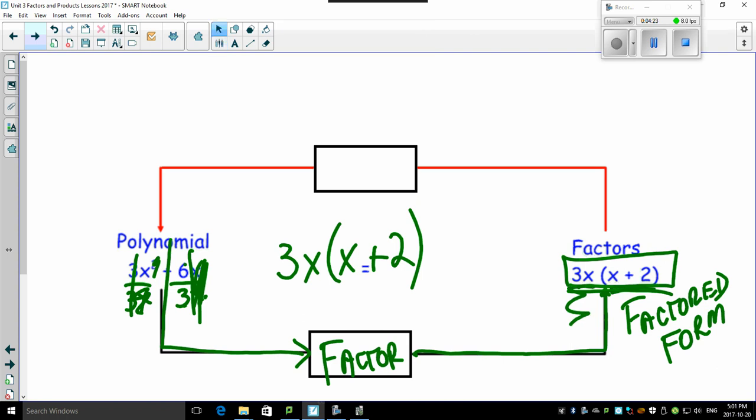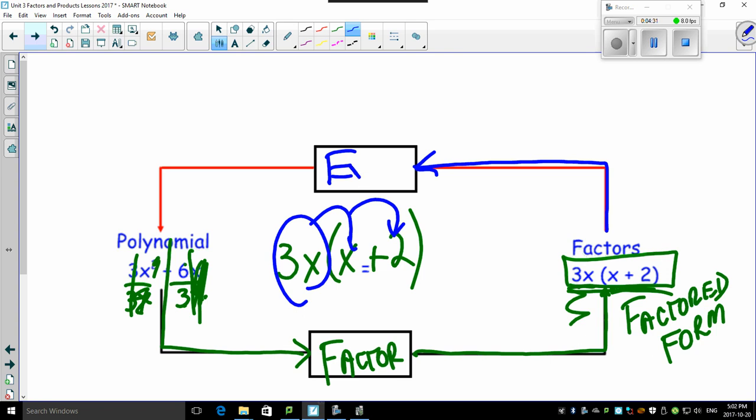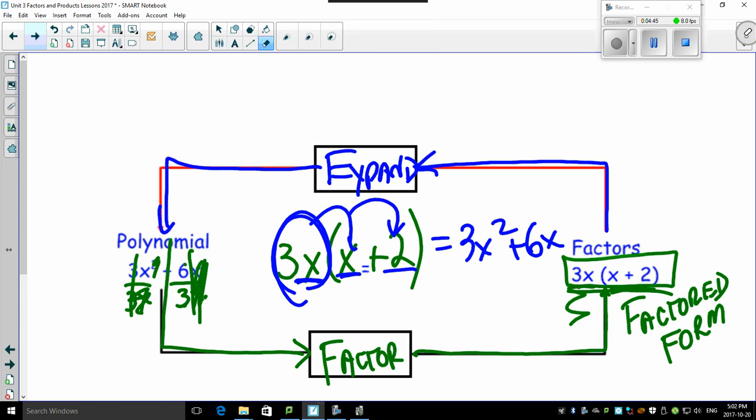Then we can, distributive law, take this guy and multiply it to here to here and expand it. And if we do that, 3x times x gives us 3x squared. 3x times 2 gives us 6x. And we get the original polynomial, which you can't see because I scribbled all over it. There it is. We get the original polynomial back.